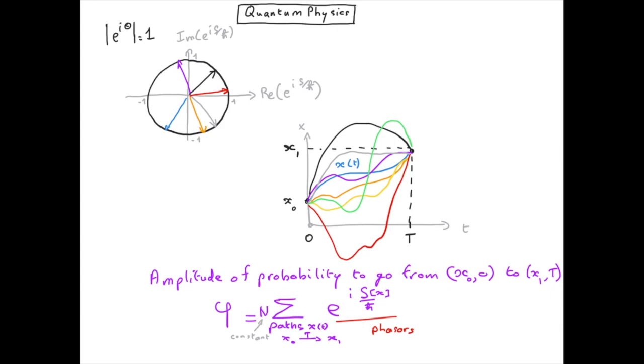At the end, when we sum all these phasors, you see that some of them are going to cancel each other. For instance, the purple one is exactly opposite to the orange one. When we take the sum of these two vectors, this is going to be zero, so these two paths are not going to contribute because they cancel each other.